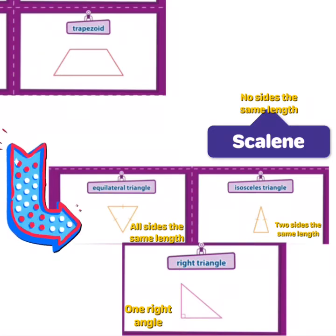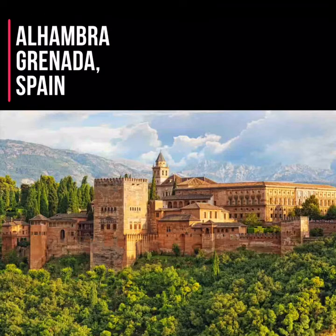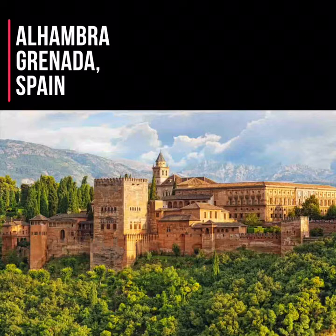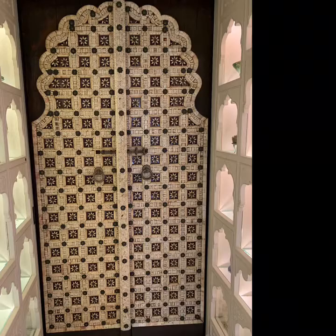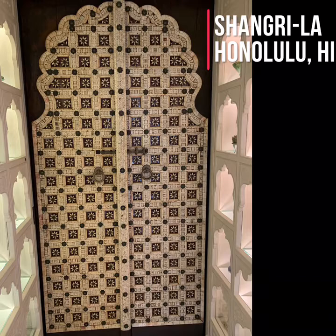Tessellations aren't anything new. The Alhambra in Granada, Spain is a beautiful example of tessellations that are used in architecture. These same tessellation designs are evident in Doris Duke's house here in Honolulu called Shangri-La.